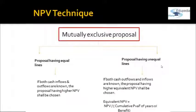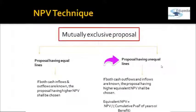We take an example of repair versus replace, or a buy option — these are all mutually exclusive proposals. Mutually exclusive proposals could be of two types: one having equal lives and the other having unequal lives. Equal lives means both proposals have the same project life, and unequal means different project lives.